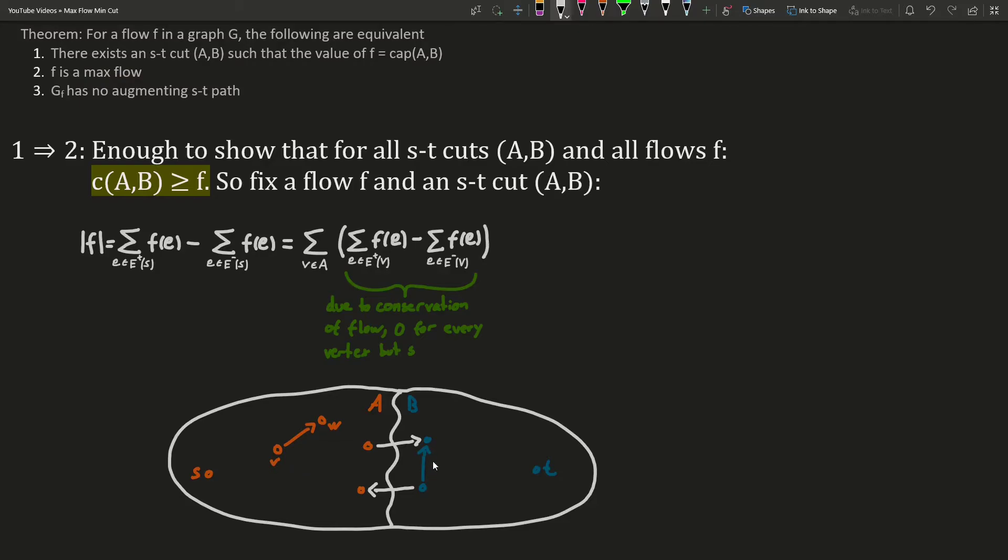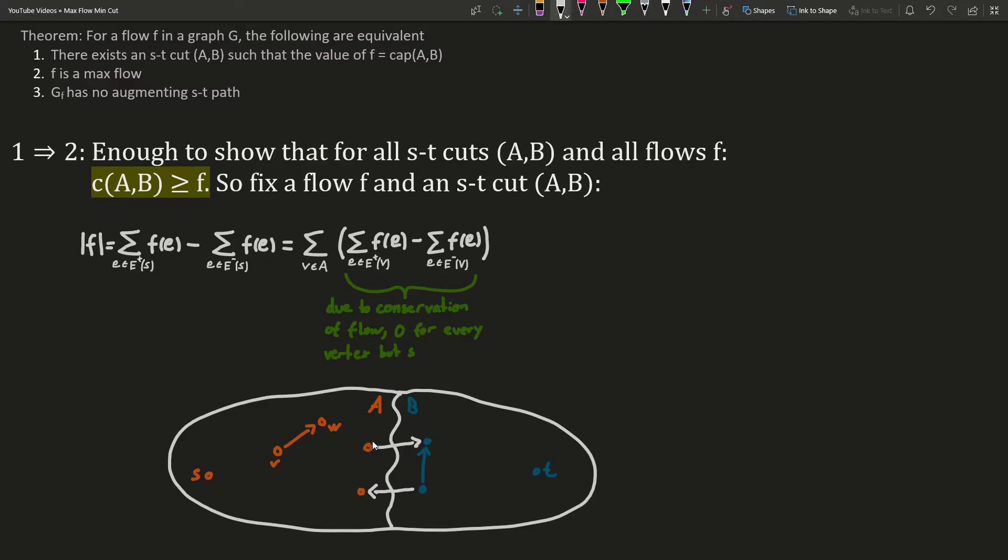Edges with both endpoints in B, such as the blue edge, don't show up in the sum at all. Edges going from A to B will show up once positively in the sum, because the start point is in A. It will not show up negatively, because the other endpoint is in B, and we only sum over all the vertices in A.